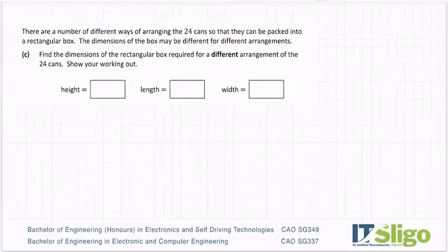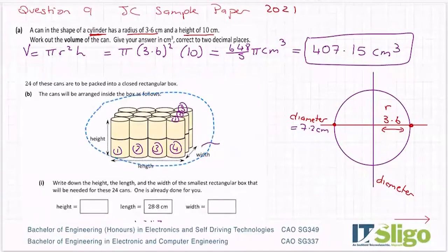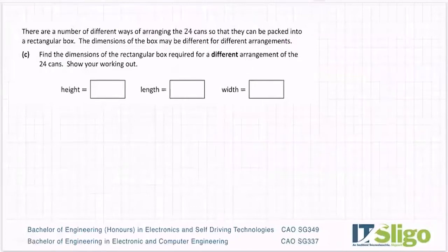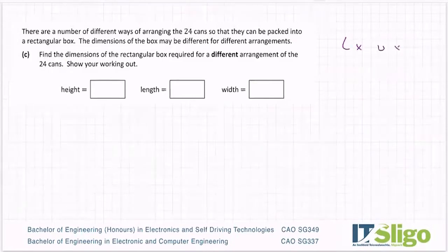There are a number of different ways of arranging the 24 cans so that they can be packed into a rectangular box. The dimensions of the box may be different for different arrangements. Find the dimensions of the rectangular box for different arrangements of 24 cans. Show your working out. So in other words, they wanted you to basically take these 24 cans and arrange them in a different way and show your workings out. So 24 cans. They did four that way by three by two high. That's a crappy draw. So four by three by two - length by width by height is what they did.